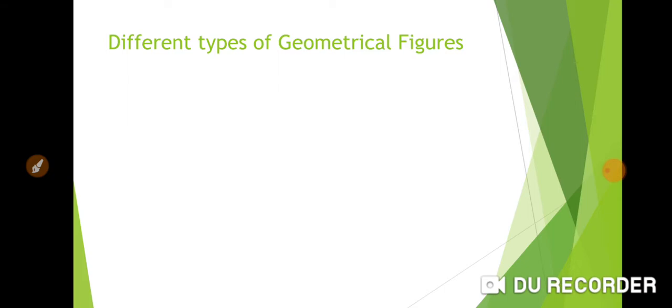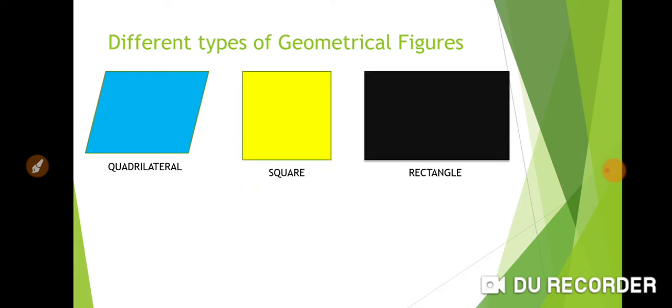So let's see the different types of geometrical figures. First one, Quadrilateral. Second, Square. Third, Rectangle. Fourth, Circle. Fifth, Triangle.